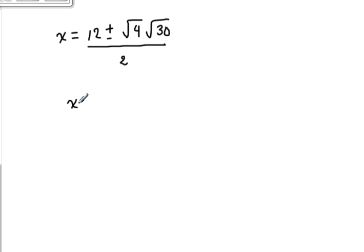All right, and we will have x equals 12 plus or minus the square root of 4 is 2 radical 30 over 2. And the last thing we have to do is to simplify, and in order to do that, we will divide both the 12 and the 2 by 2. So 12 divided by 2 is 6 plus or minus 2 root 30 over 2 leaves us with root 30.